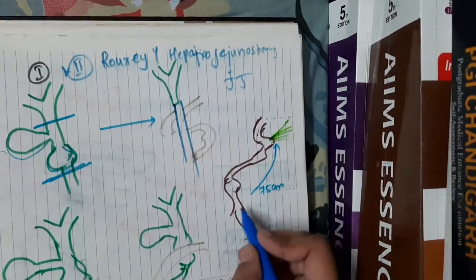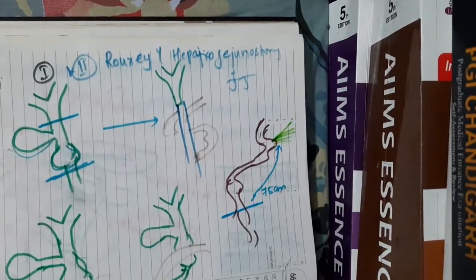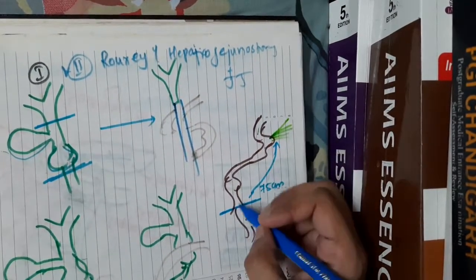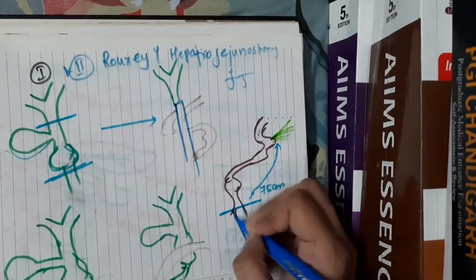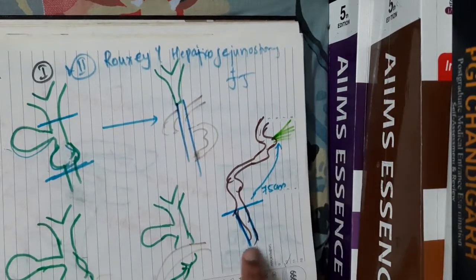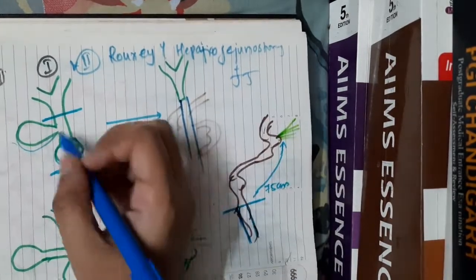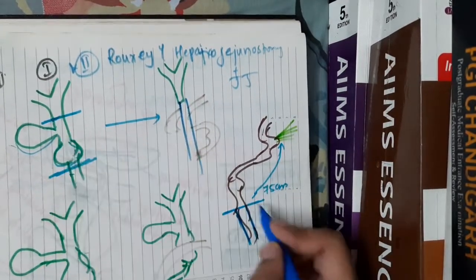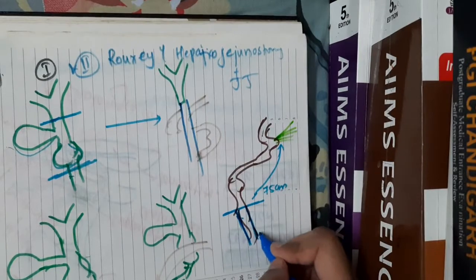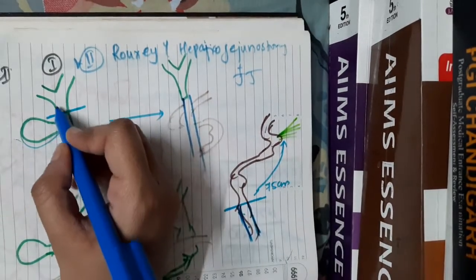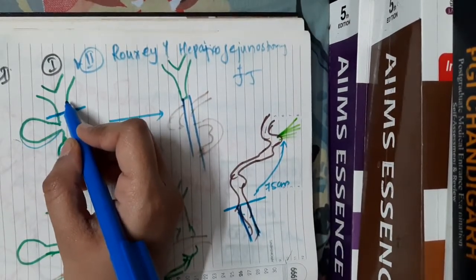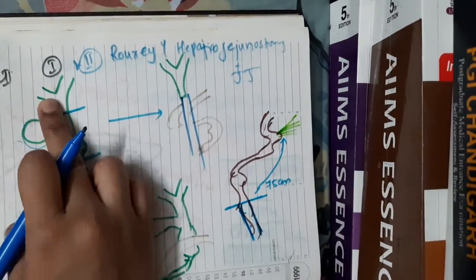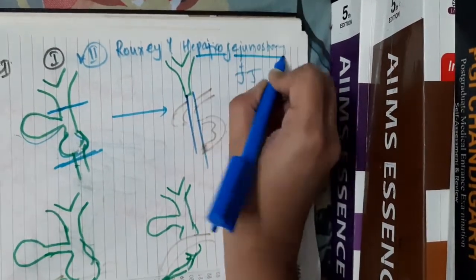We measure 75 centimeters and divide the jejunum into a proximal and distal part. The distal part is anastomosed with the common hepatic duct — this anastomosis is called hepaticojejunostomy.